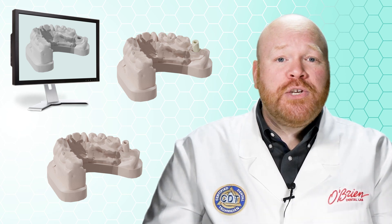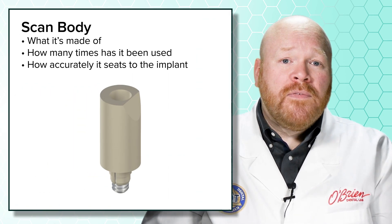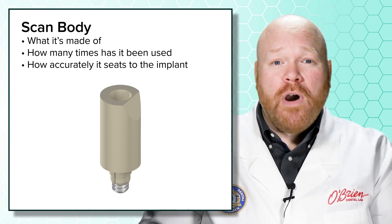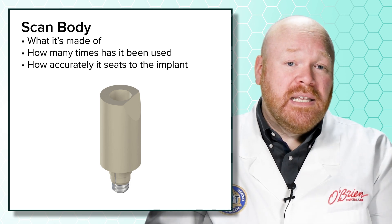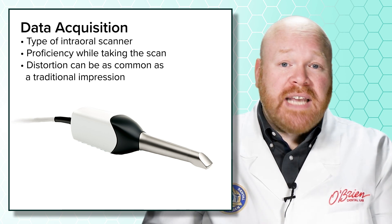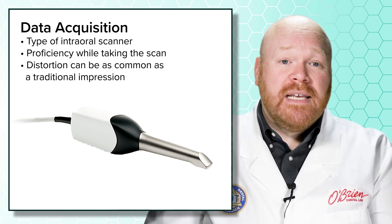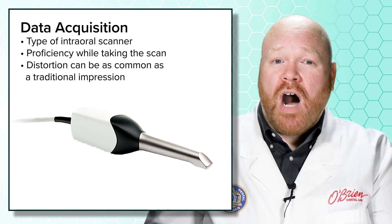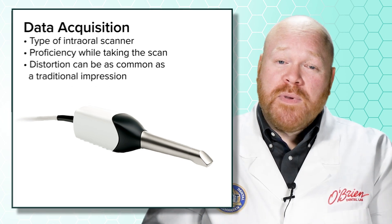The reason for that is that we've now added two more steps that each introduce the potential for discrepancy. With a typical intraoral scan case, there are four main things that can decrease accuracy. The first is the scan body itself — depending on what it's made of, how many times it's been used, and how accurately it seats to the implant. The second is the data acquisition: the type of intraoral scanner you're using and how proficient the employee is at taking the scan can both affect the outcome.